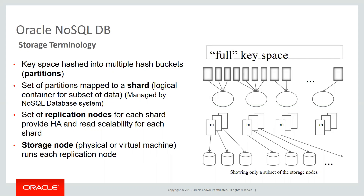The distribution of partitions in a shard is even. For example, if you have three shards and 30 partitions, each shard gets 10 partitions. Inside the shard, there are one or more replication nodes, or RNs — these are Java multi-threaded server processes. For high availability and read scalability, we recommend having three such RNs inside a shard. The replication nodes are deployed on a storage node, which is a physical or virtual machine. You can think of a storage node as a single unit of failure.